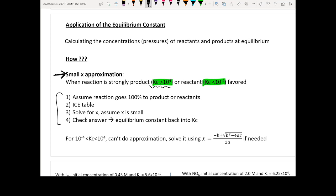If it's actually larger than 10 to the negative 4 or smaller than 10 to the fourth, you cannot use small x approximation. You want to actually calculate things step by step. And eventually this will be the equation you are going to use to solve the amount of change.